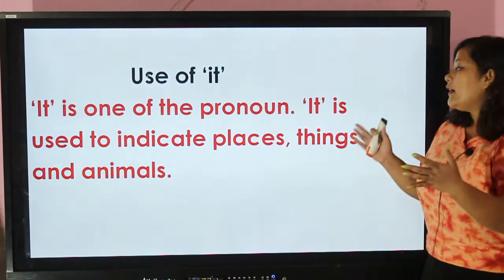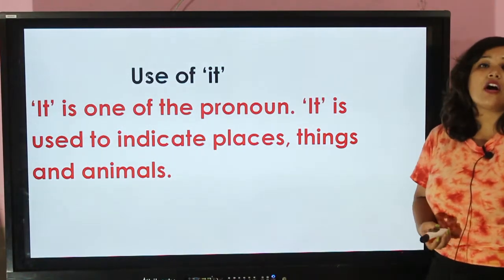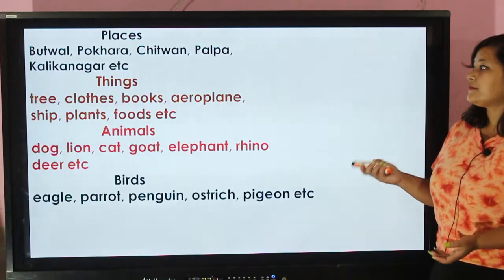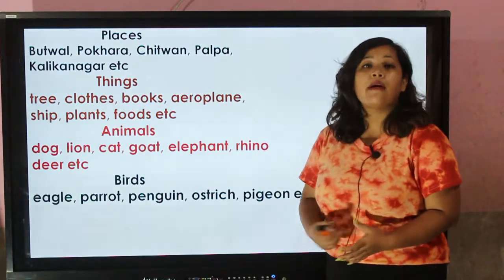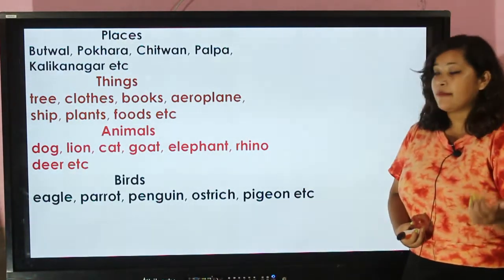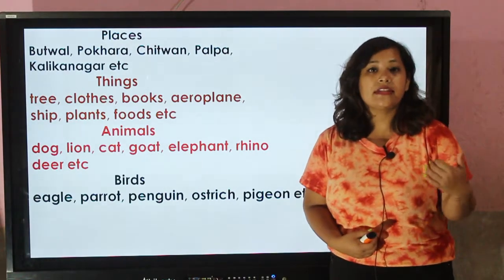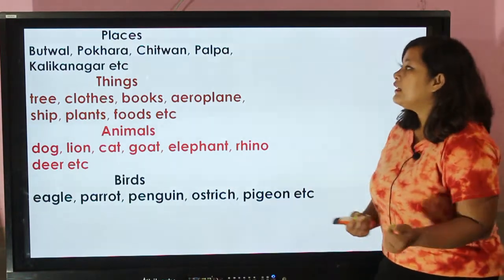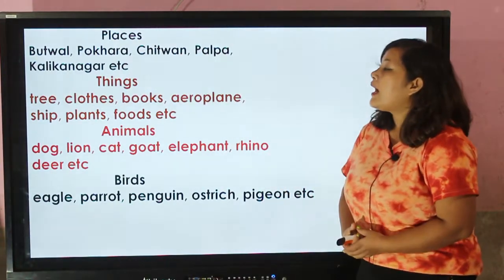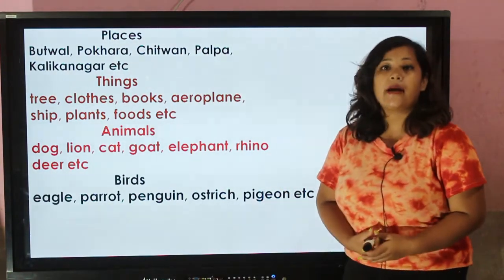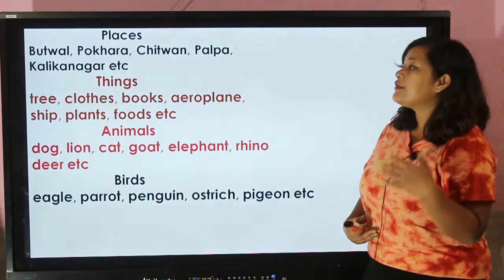We can use 'it' when we are going to describe about some places, things, animals, or birds too. Here we have some names of places, things, animals, and birds where we can use the pronoun 'it'. Butwal, Pokhara, Chitwan, Palpa, Kalikanagar, etc. are places.